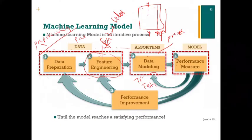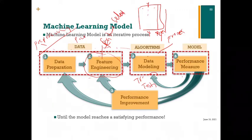If the performance is okay you can stop, but sometimes the performance is not okay. We discussed underfitting and overfitting — when the performance looks poor, you might have to go back to the modeling stage. Machine learning is an iterative process. It's not a process where you get it right the first time — that's very rare.